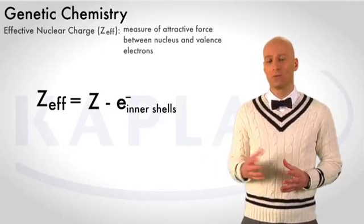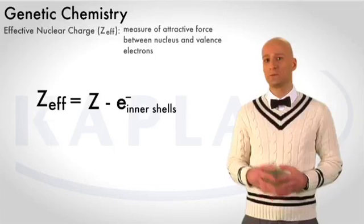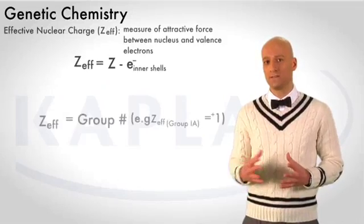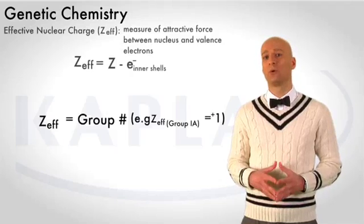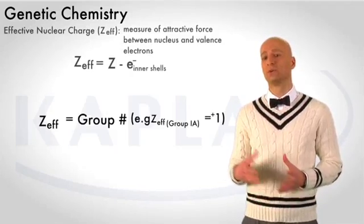There's a quick way to remember the effective nuclear charge for all elements within a given group. And that is simply that the Z-effective is equal to the group number for the representative elements. In other words, group 1A through group 8.